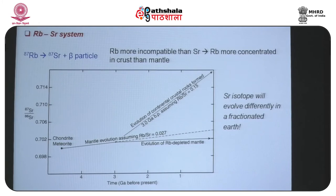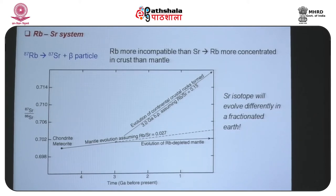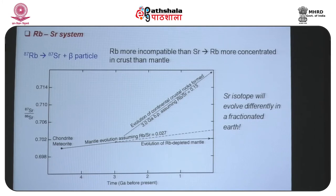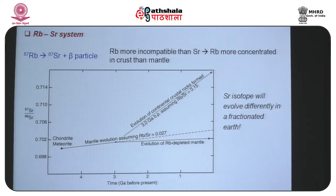This is because around 3 billion years ago there was a large-scale melting event which produced granitic-type melt that moved up to the surface and formed the continental crust. Since rubidium is much more incompatible than strontium, rubidium concentrated in the granitic melt and ultimately in the crust. With most of the rubidium concentrated in the crust, more 87Sr has been produced from that time on, and the 87Sr/86Sr ratio has evolved with a much steeper slope from this large-scale melting event.